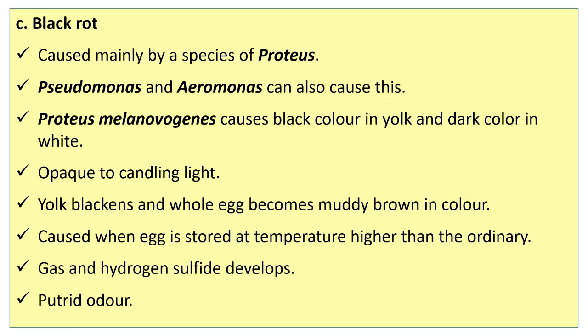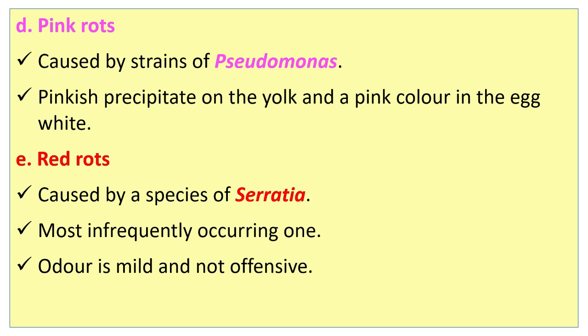Black rot is caused by the protease of Pseudomonas and Aeromonas. Proteus melanovagens causes black color in yolk and dark color in white. It appears opaque to candling light; the whole egg becomes muddy brown in color. It is caused when egg is stored at temperature higher than ordinary temperature; gas and hydrogen sulfide develops with putrid odor.